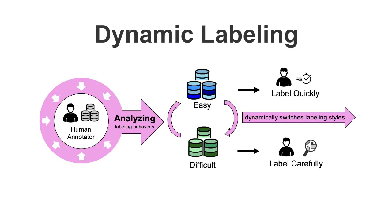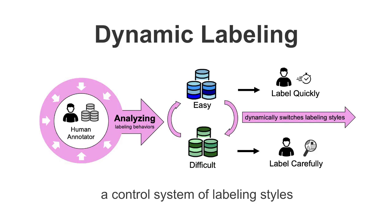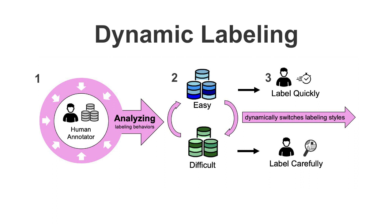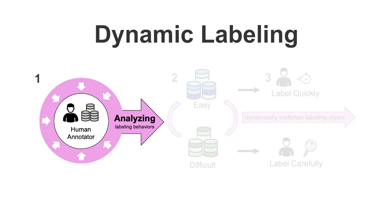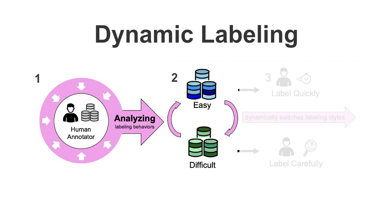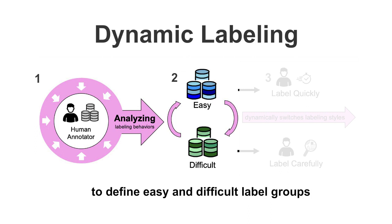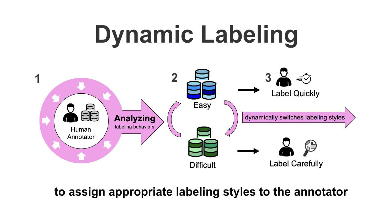In this study, we propose Dynamic Labeling, a control system of labeling styles which can solve this problem. There are three parts in our labeling system: the first part is to analyze annotators' behaviors, the second part is to define easy and difficult label groups, and the third part is to assign appropriate labeling styles to the annotator.